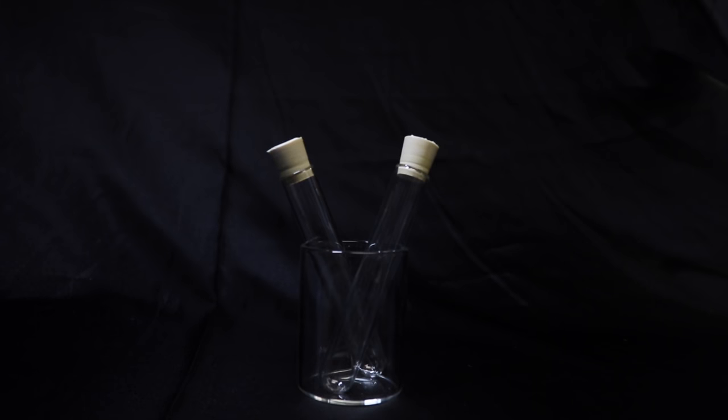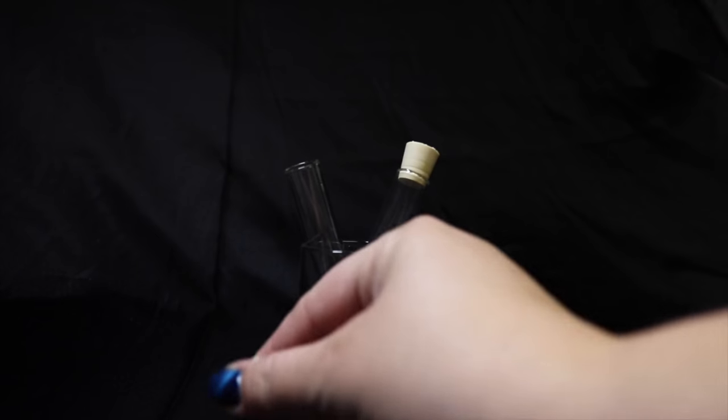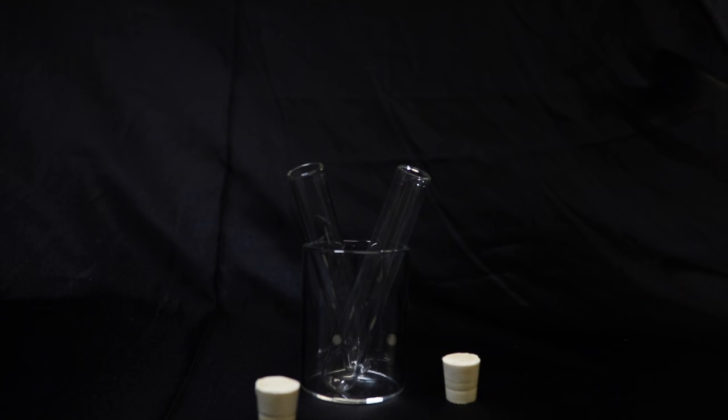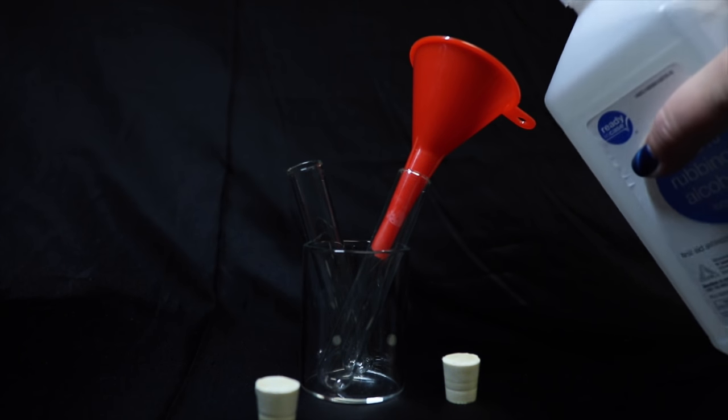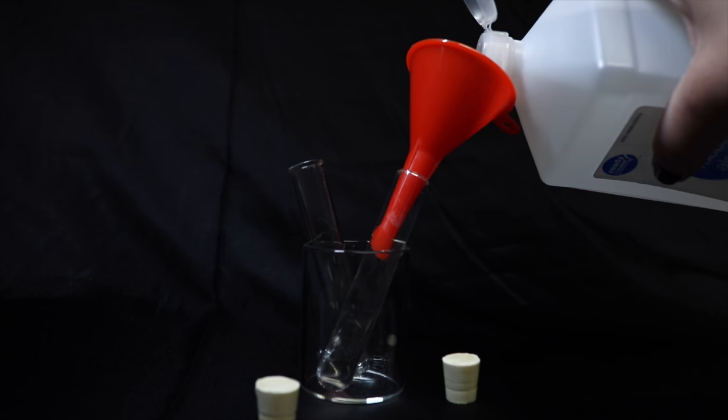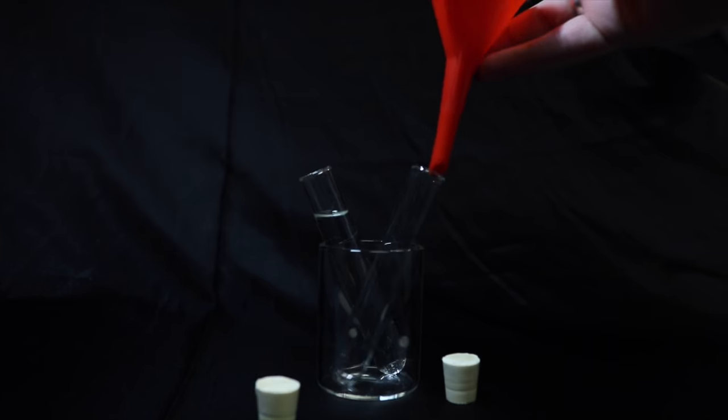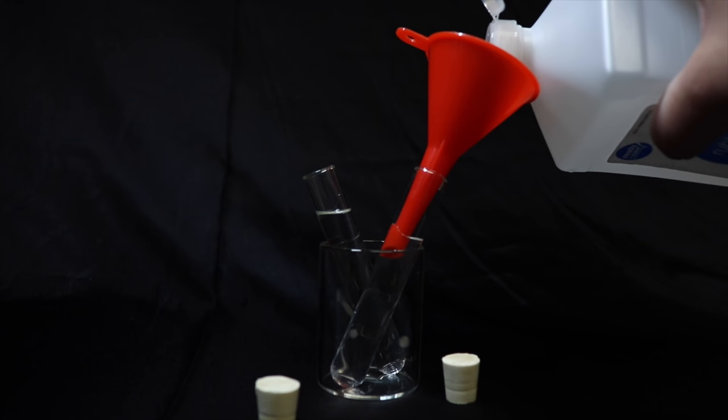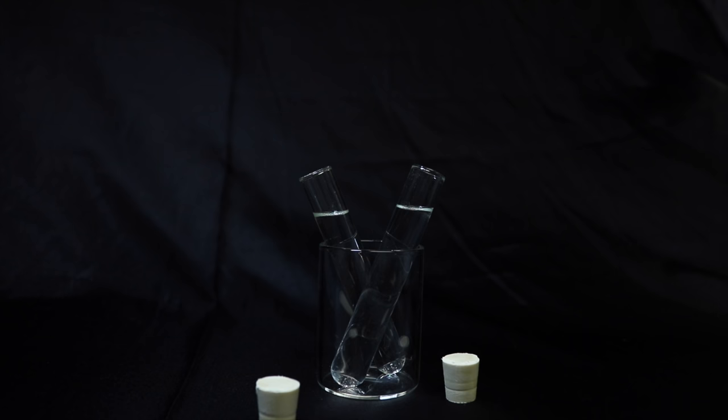So this potion is pretty easy to make. All we're going to do is take our glass test tubes and take the stopper off. I'm actually going to use a funnel just because of how small these are, and we are going to fill these with the rubbing alcohol.